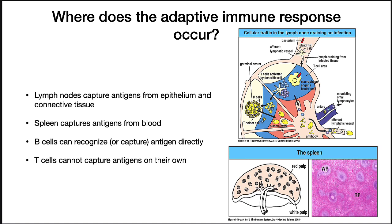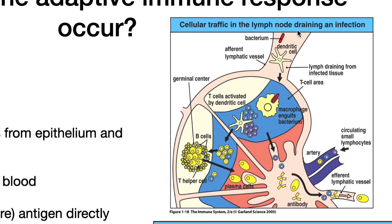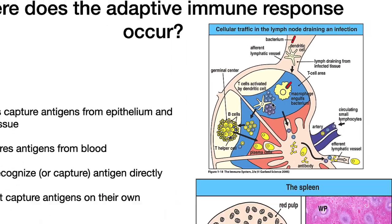B cells can recognize or capture antigens directly, but their response is enhanced if the antigen is presented to them by an antigen presenting cell. T cells cannot capture antigens on their own. An antigen presenting cell, such as a dendritic cell or a macrophage, will migrate through the efferent duct to a lymph node, where it will encounter T cells or B cells. If they detect a matching antigen, they will then differentiate.